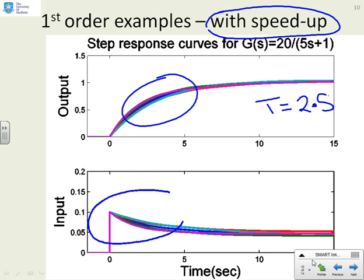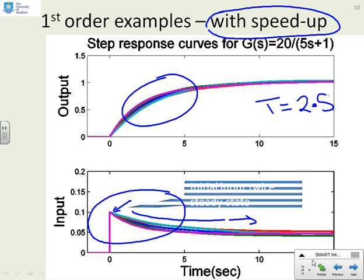You can see the time constants about 2.5 exactly as expected. We look at the inputs and we notice, yeah, OK, the initial value is twice as big as the steady state, exactly as you would expect because you're trying to get a fast transient behavior. But thereafter, it's nice and smooth as it goes to the steady state. So what we've got is this heuristic design seems to be working quite effectively for a simple model.